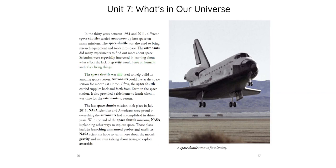The Space Shuttle was also used to help build an amazing space station. Astronauts could live at the space station for months at a time. Often, the Space Shuttle carried supplies back and forth from Earth to the space station. It also provided a ride home to Earth when it was time for the astronauts to return.